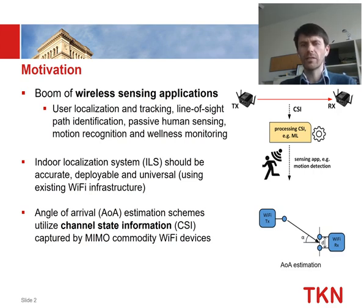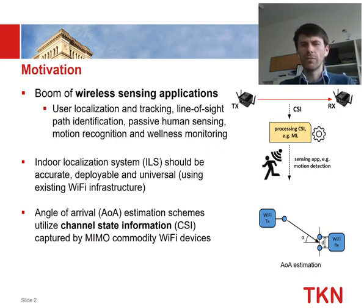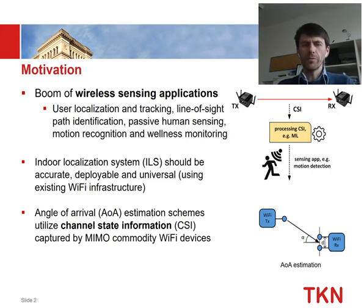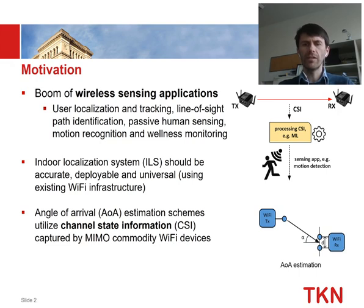What we would like to have indoors is something similar to what GPS provides outdoors — the ability to localize yourself using existing Wi-Fi infrastructure that is already deployed. The most promising approaches are angle-of-arrival estimation schemes which utilize the channel state information provided by Wi-Fi devices to measure the angle of arrival.